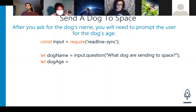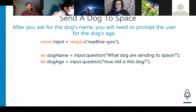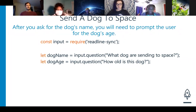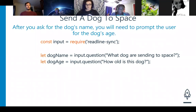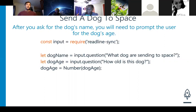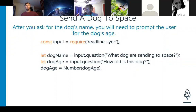After we ask for the dog's name, we need to prompt for the dog's age: let dogAge equal input.question asking 'What is the dog's age?' We ask two questions using the same input object. Now once we get the age back it's supposed to be a number, so we need to convert it: dogAge equals Number(dogAge). We have to save it back into that variable. Make sure you're using the correct data type — age comes back as a string, so convert it to a number.